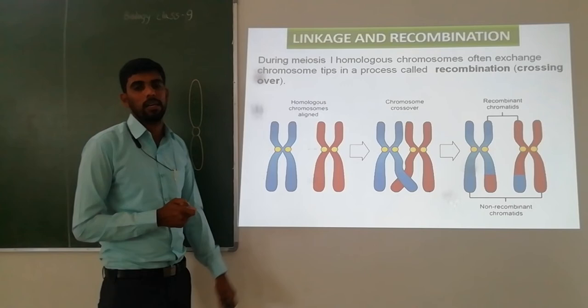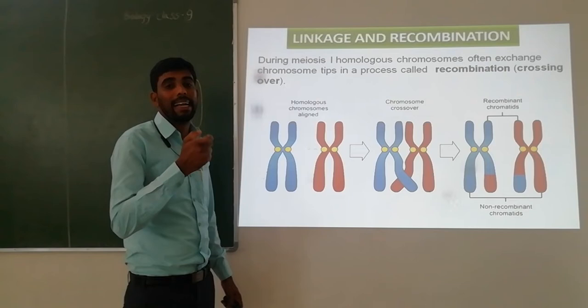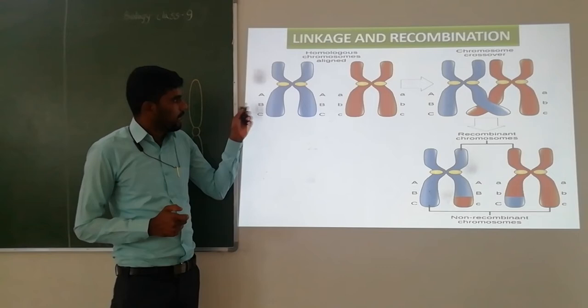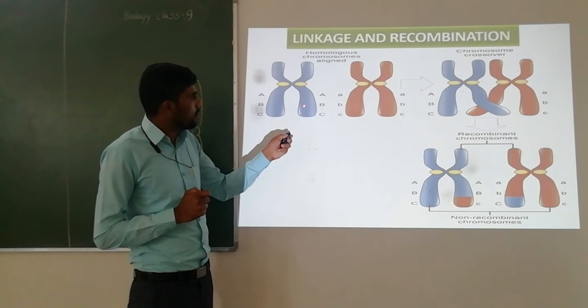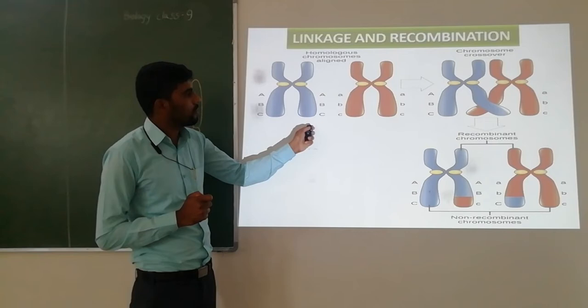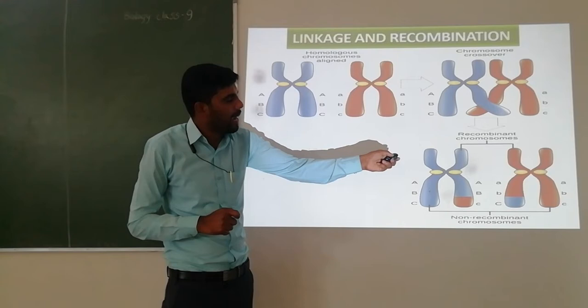Linkage and recombination are two different concepts with different definitions, but both are interlinked. During crossing over, the two homologous chromosomes exchange their chromatids, and along with chromatids, genes are also exchanged. Due to crossing over, they show variation or recombination. Out of four chromatids, two will be recombinant types and two will be non-recombinant. Fifty percent of gametes will be recombinant and fifty percent will be non-recombinant.